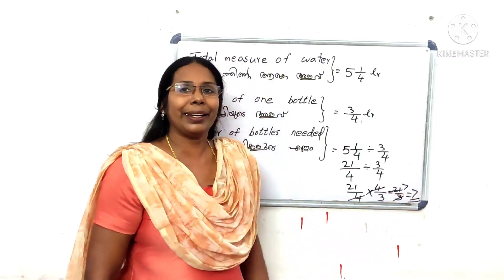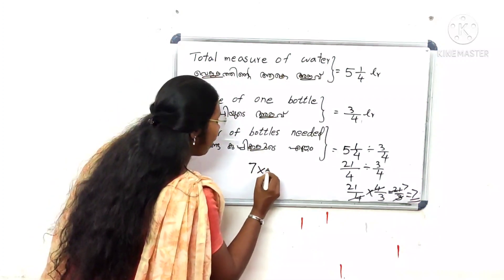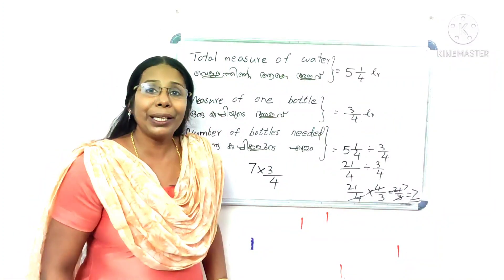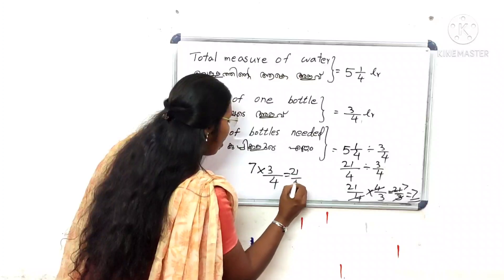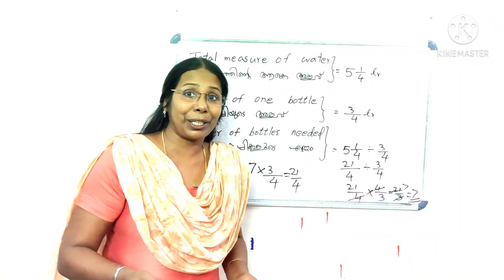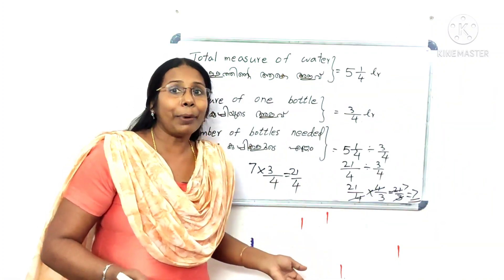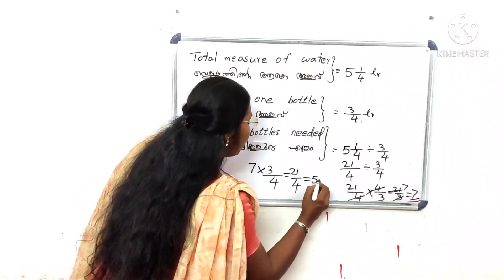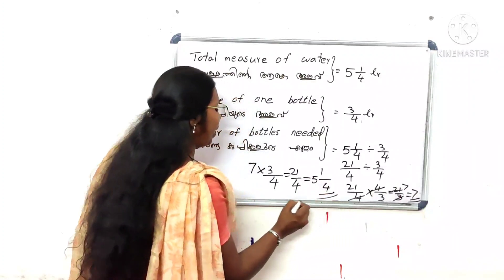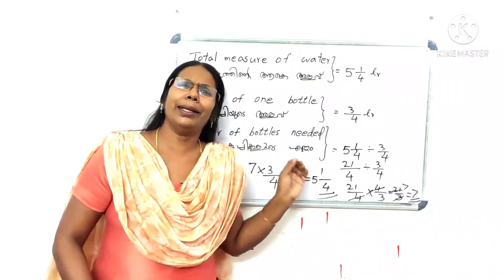How many times do we think? 7 by 4 is equal to 3 by 4. So 5 by 4 is equal to 4, and 7 by 4 is equal to 3 by 4. Then 4 by 4 is equal to 4. So 1 by 4 is equal to 5. It's very easy.